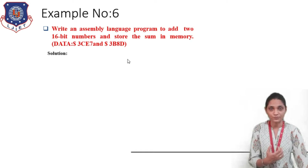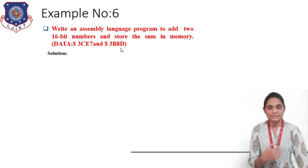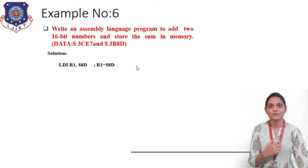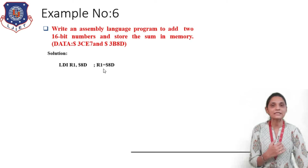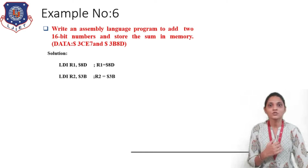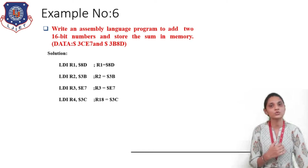We have to add these two 16-bit numbers using 8-bit registers. So first we have to store this 16-bit data inside two registers each. We can use any registers, but for simplicity we are using R1, R2, R3, R4. In R1 we store E7, in R3 we store 3C — wait — in R1 we store E7, in R2 we store 3B, in R3 we store E7, and in R4 we store 3C, loading each byte of the 16-bit operands into separate registers.